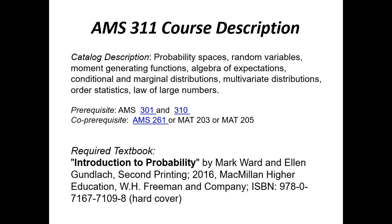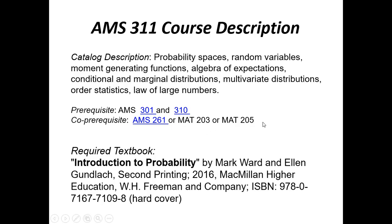There are prerequisites, as you can see here: AMS 301 and 310. AMS 310 is the precursor — that's the survey of probability and statistics. You do need to have a decent amount of calculus, roughly speaking, Calc 3. So these are important prerequisites. Students need to know these things before they take AMS 311.